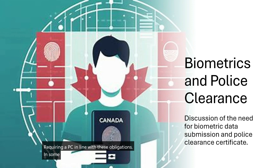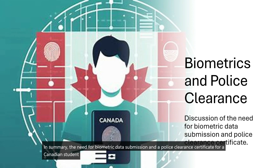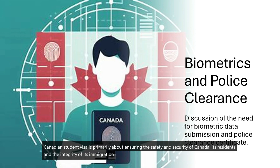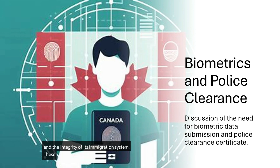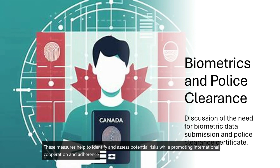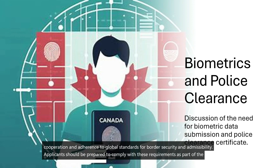In summary, the need for biometric data submission and a police clearance certificate for a Canadian student visa is primarily about ensuring the safety and security of Canada, its residents, and the integrity of its immigration system. These measures help identify and assess potential risks while promoting international cooperation and adherence to global standards for border security and admissibility. Applicants should be prepared to comply with these requirements as part of the visa application process.